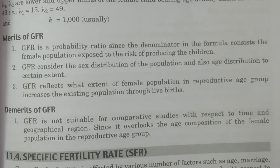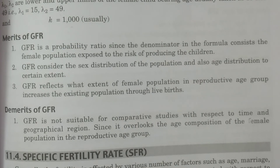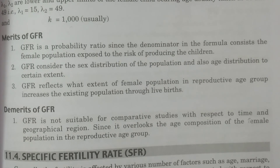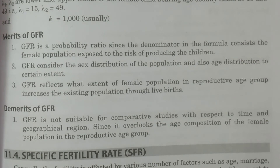So these are the two measures I have discussed here: Crude Birth Rate (CBR) and General Fertility Rate (GFR). The remaining three measures will be discussed in part two. Thank you.